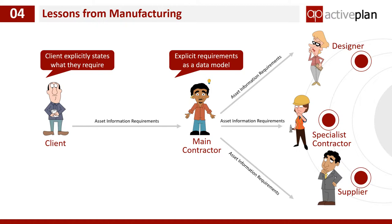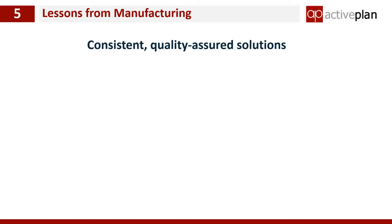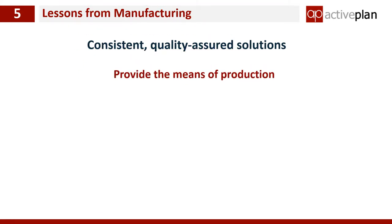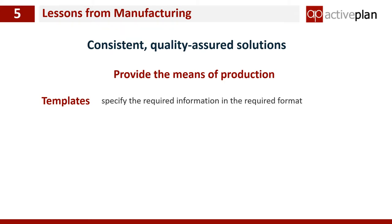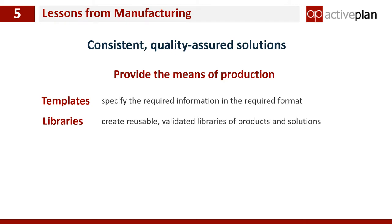The supply chain can then allow for these in their tenders. So for the first time, it's amazing — for the first time the main contractor can now guarantee to deliver what the client wants. At ActivePlan we can provide the supply chains with the means of production — the means to produce quality asset information. We have libraries of templates that tell the supply chain exactly what information the client wants, which makes it much easier for them to provide it.